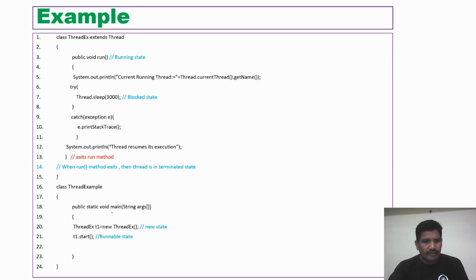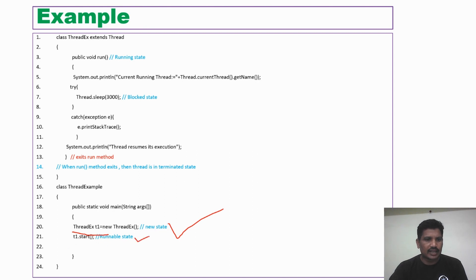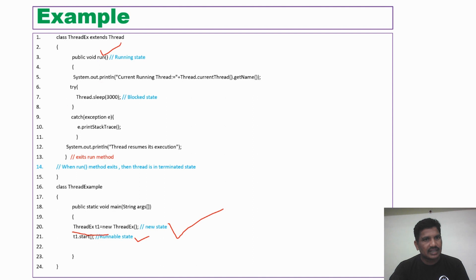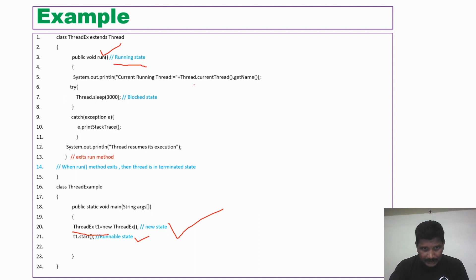In the example, once the instance comes into the main method and is created, the thread is in the new state. When the thread invokes the start method, it will be in the runnable state and ready for execution. Once the thread scheduler selects it and executes the run method, the thread is in the running state. You can use the method Thread.currentThread().getName() to know the name of the current running thread.